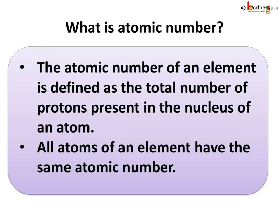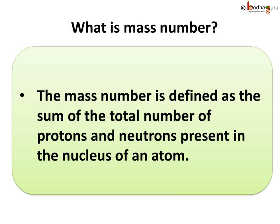To sum up what we learnt today: the atomic number of an element is defined as the total number of protons present in the nucleus of an atom, and all atoms of an element have the same atomic number. The mass number is defined as the sum of the total number of protons and neutrons present in the nucleus of an atom. That was all about the mass number and the atomic number.